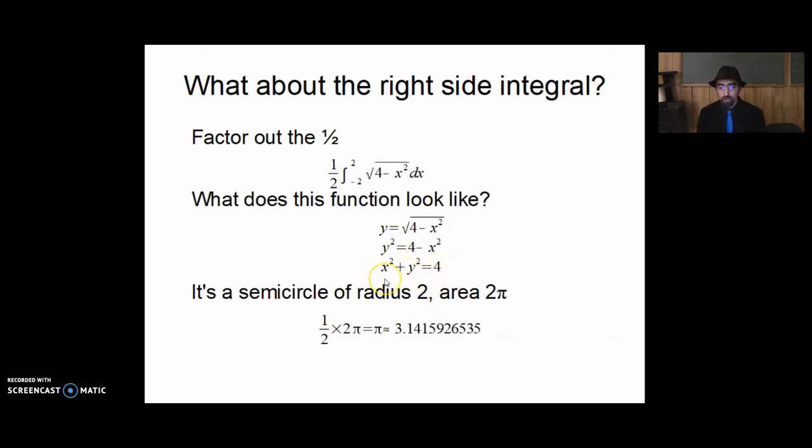It's a semicircle. Semi because it's a positive square root, so the full circle would have positive and negative values of y. This one only gets you positive values of y.